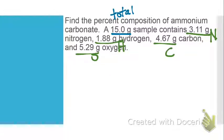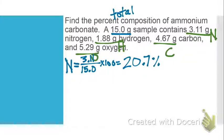So we need to do each of these elements. I am going to specify which element I'm working with each time, just so we won't get confused. For nitrogen, the part of this sample that was from nitrogen was 3.11 grams, dividing by our total which is 15.0, times 100 is going to give us 20.7%.